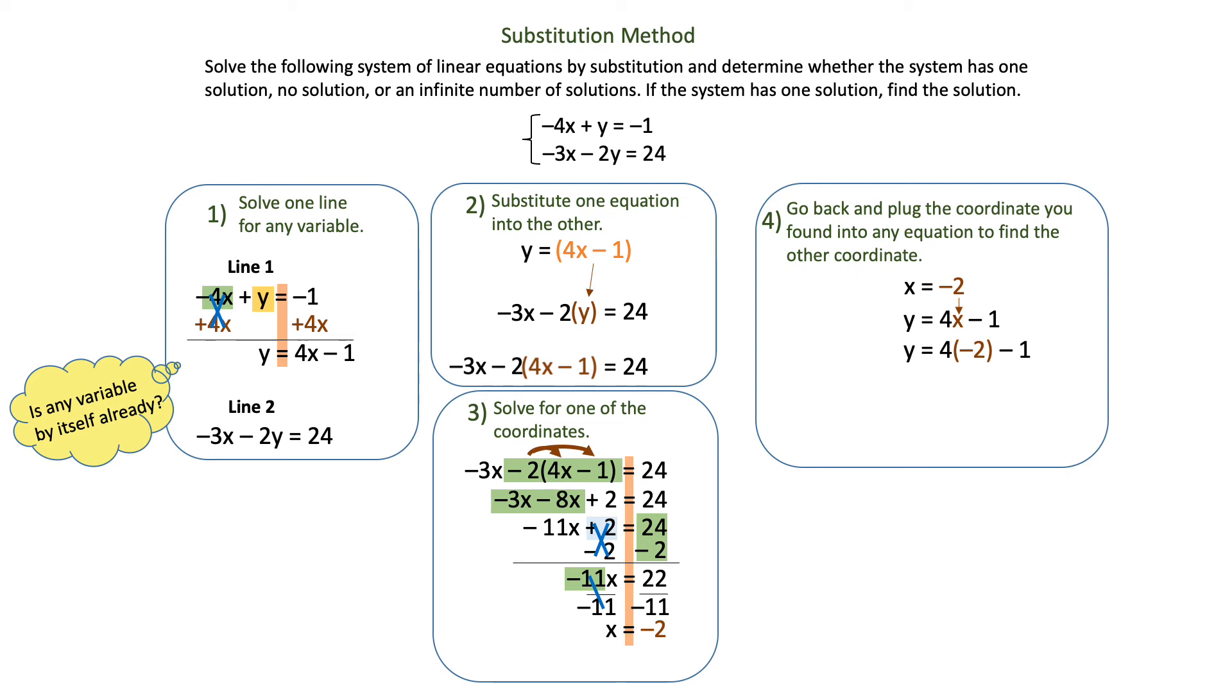So that's going to give me y equals 4 times negative 2 minus 1. I'll multiply 4 times negative 2 and get negative 8 minus 1. Then I will add my like terms, negative 8 minus 1, and get y is equal to negative 9.